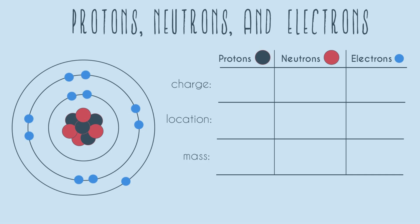I have a little grid here. First, one of the most important things you can know about your subatomic particles is their charge. Each one has a different charge. Protons have a charge of positive one. Neutrons have a charge of zero. They're neutral. And electrons have a charge of negative one.